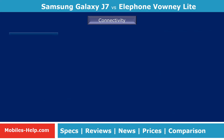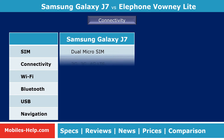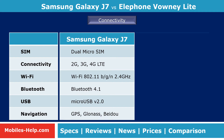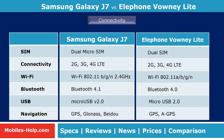Both phones support 2G, 3G, and 4G LTE connectivity features, as well as Wi-Fi, Bluetooth, USB, and navigation. Galaxy J7 supports dual micro SIM, whereas Bounty Lite supports dual SIM.